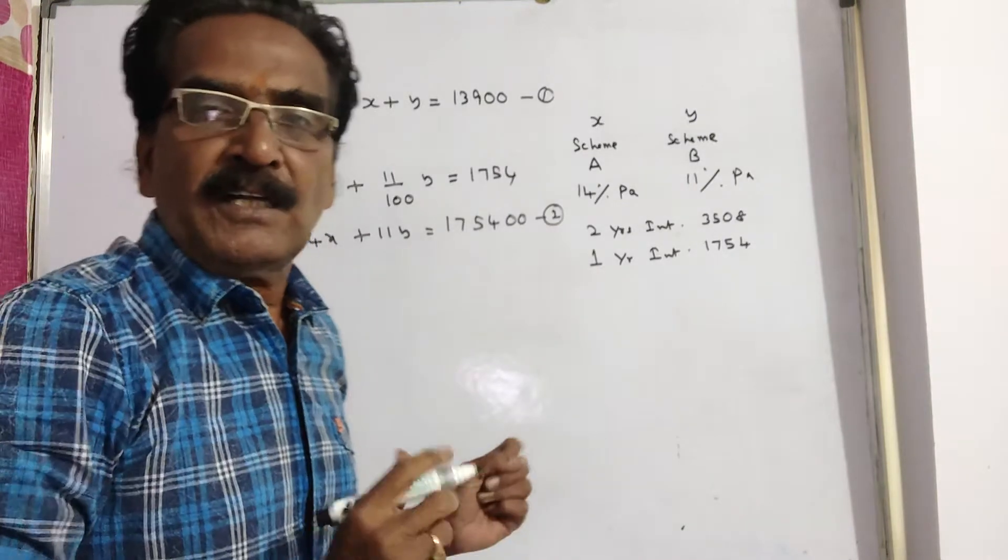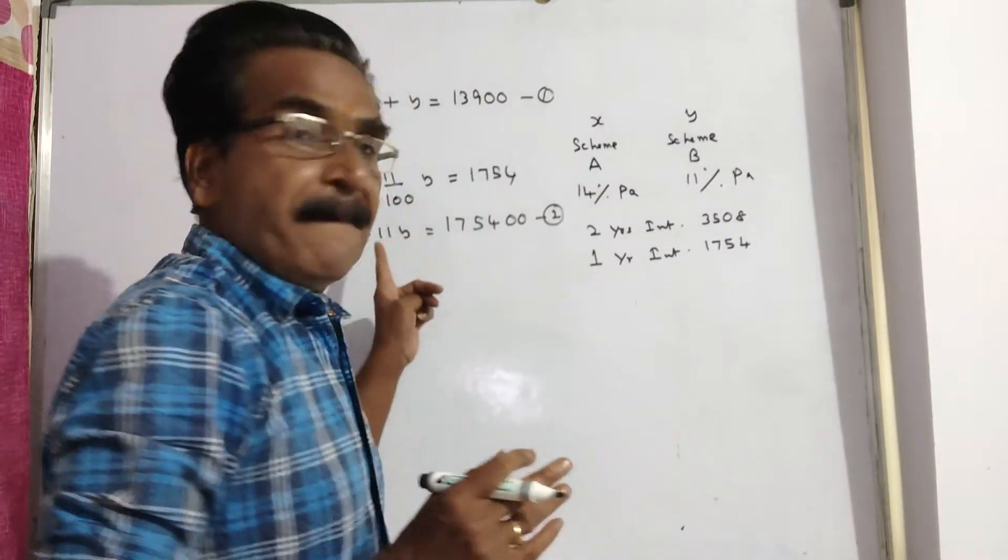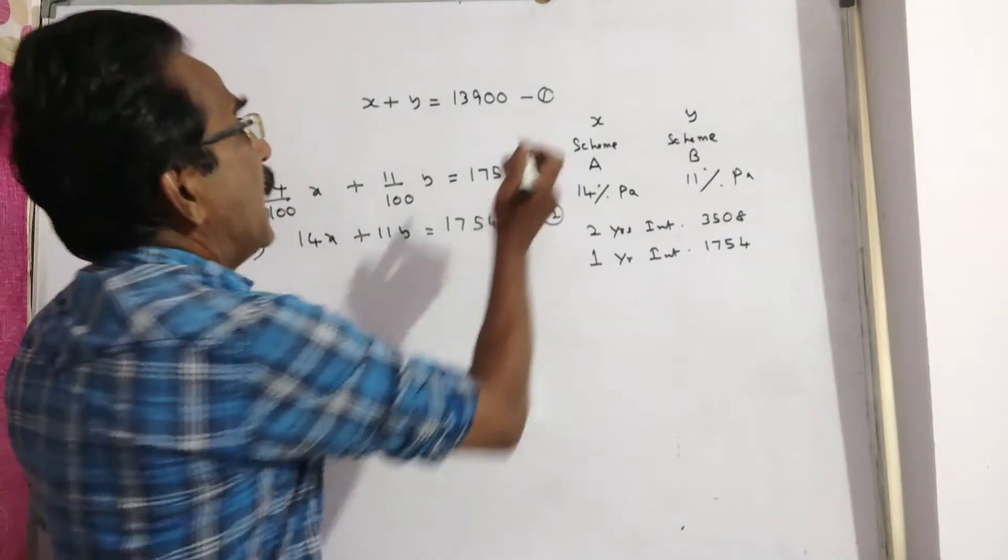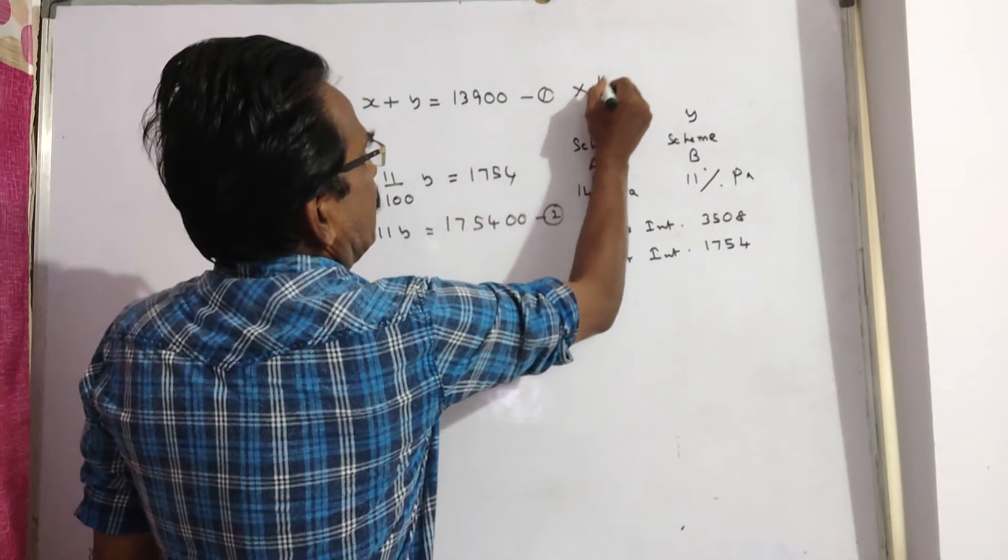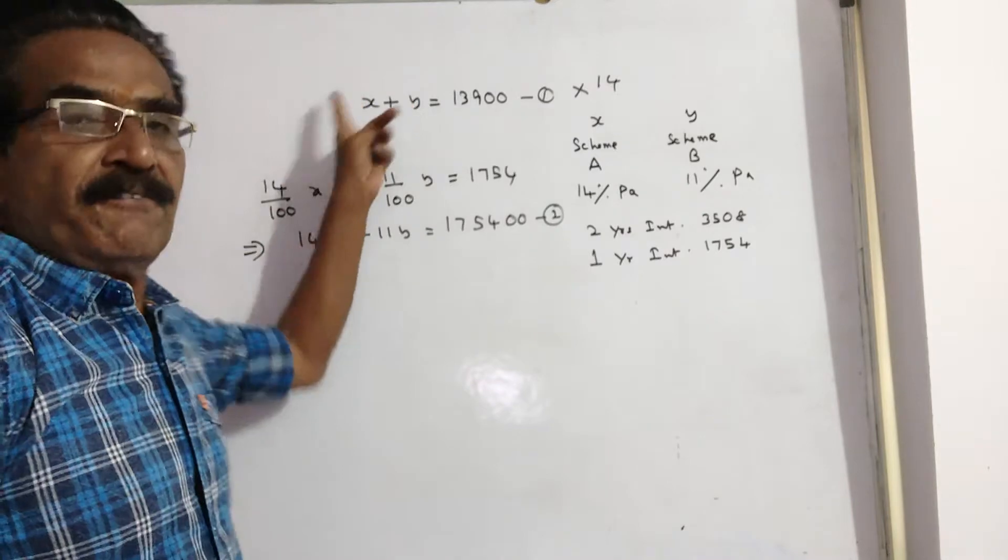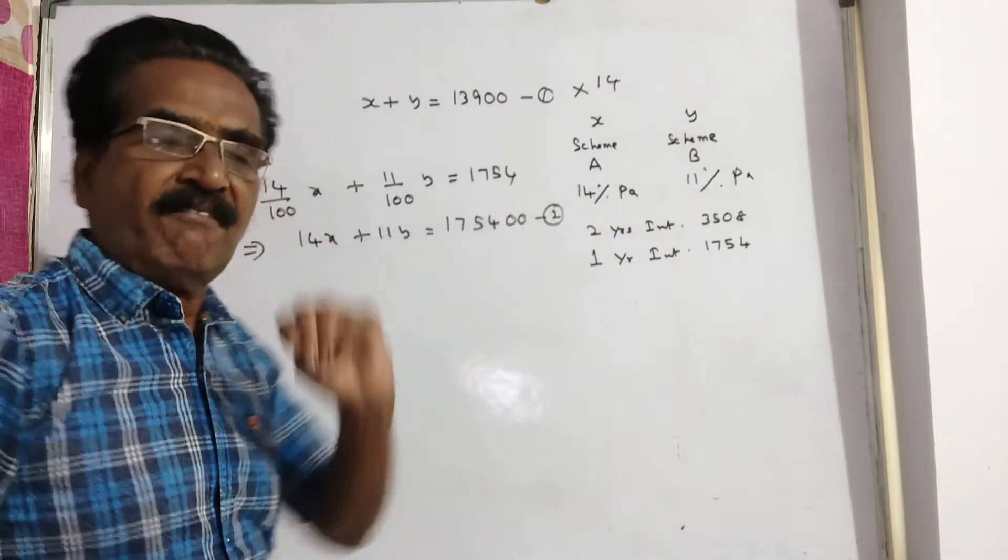Now we want the sum invested in scheme B. So I am multiplying the first equation by 14 and trying to equate the terms of X to get Y.